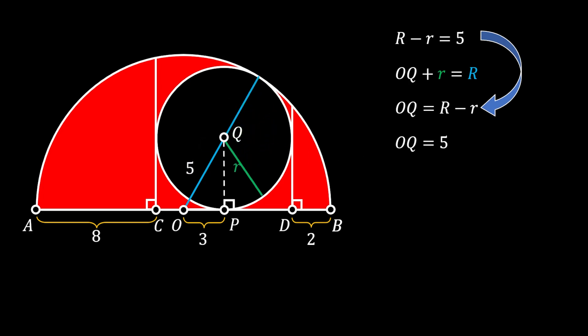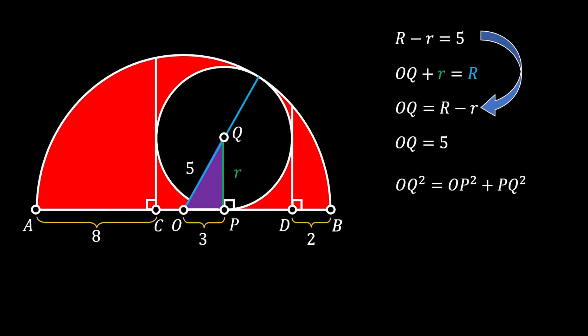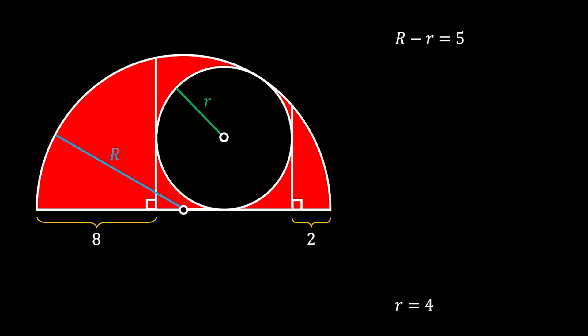Placing the radius of the smaller circle in a vertical position reveals a right triangle OPQ. Applying the Pythagorean theorem: OQ² = OP² + PQ², which gives 5² = 3² + r². Simplifying: r² = 25 − 9 = 16, so the radius of the smaller circle is r = 4.